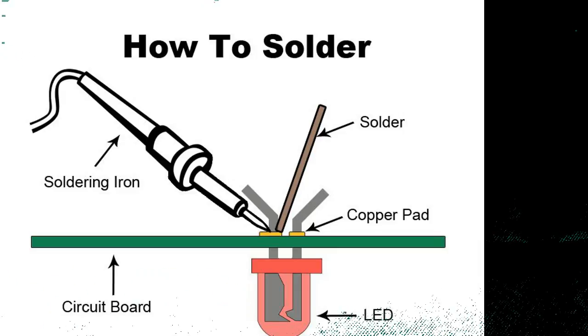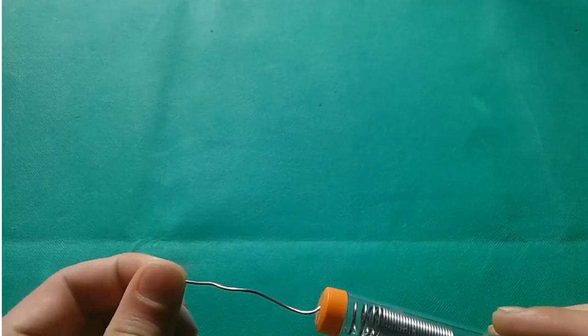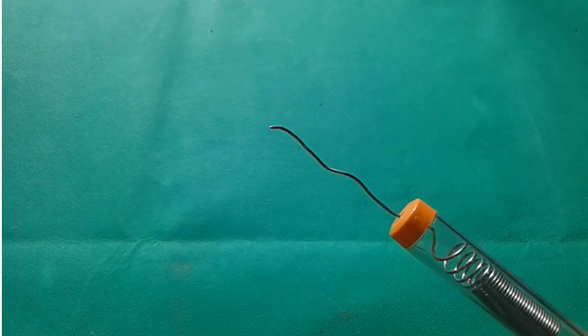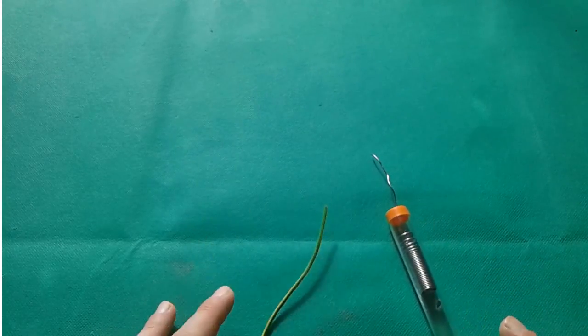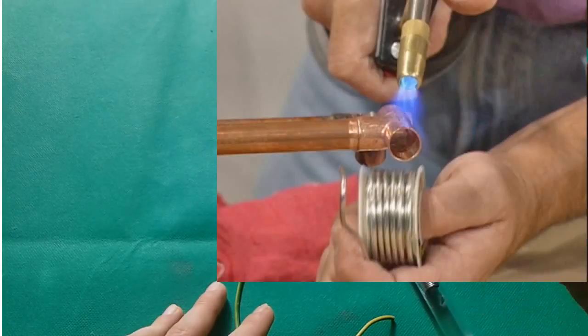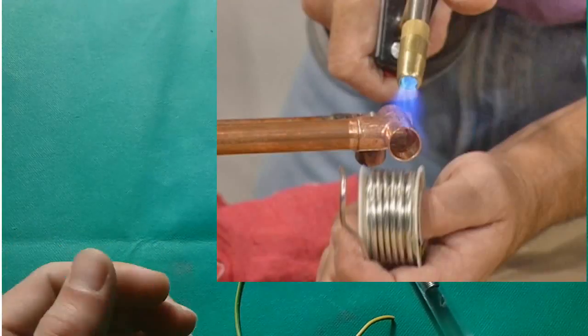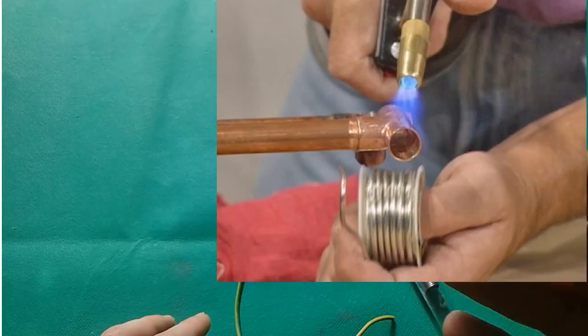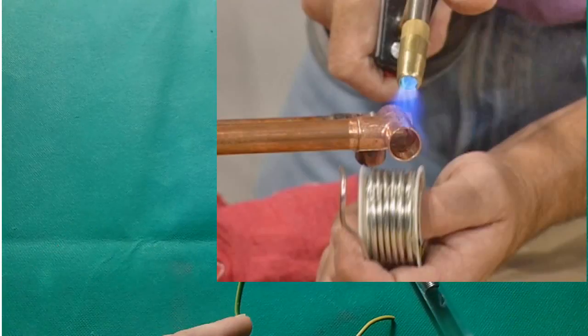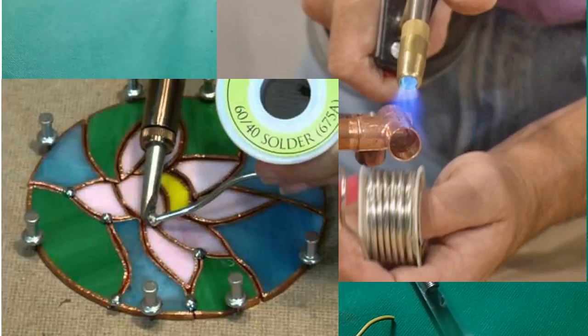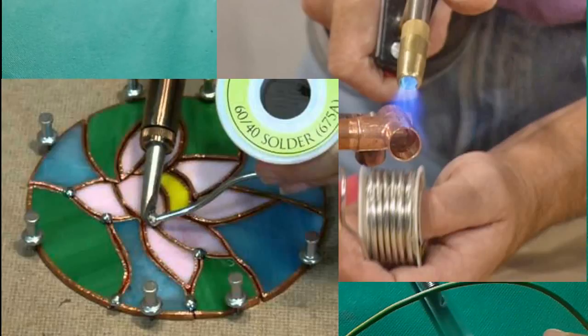Today we're going to learn how to solder. This is the solder that you're going to need to join your electrical wires. Although this soldering has other applications like joining copper tubes or as a hobby joining pieces of glass, our subject today is soldering of wires.